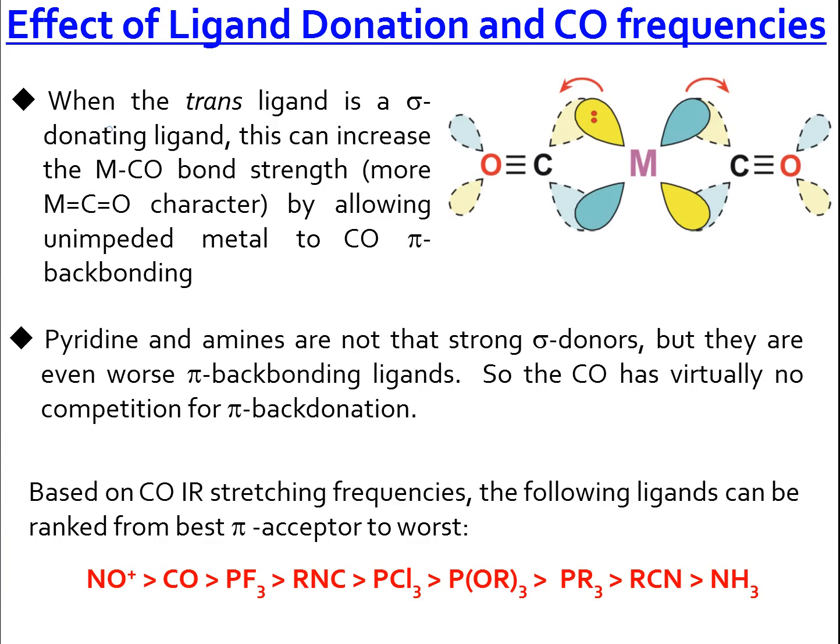Based on experiments done on metal carbonyl complexes, especially on the CO stretching frequency in infrared, the following ligands can be ranked from the best π acceptor to the worst. The best π acceptor is NO⁺, and the ranking proceeds down from there.